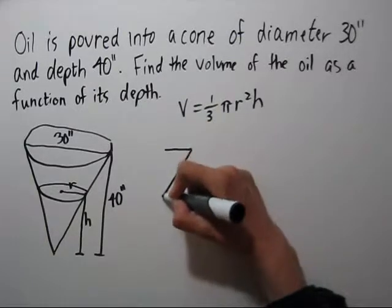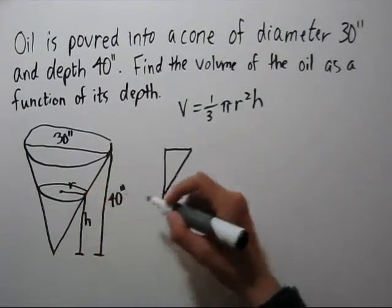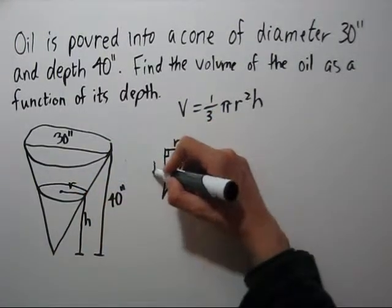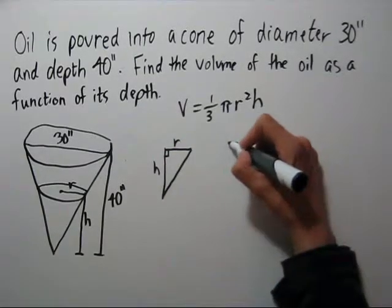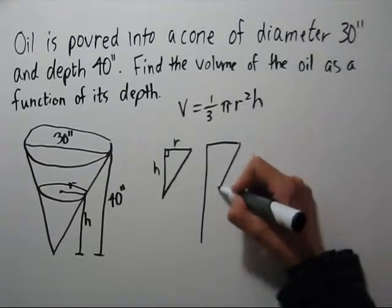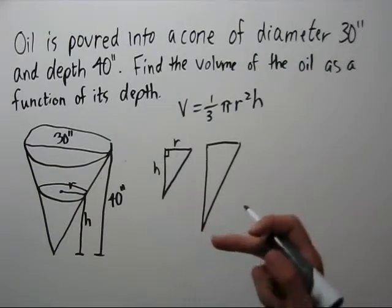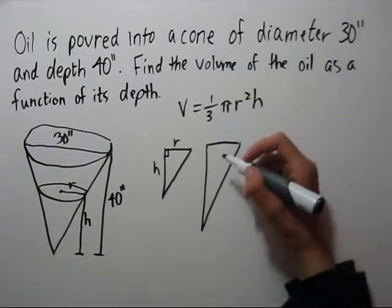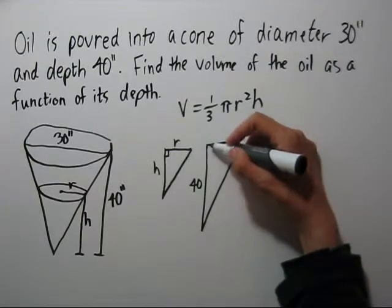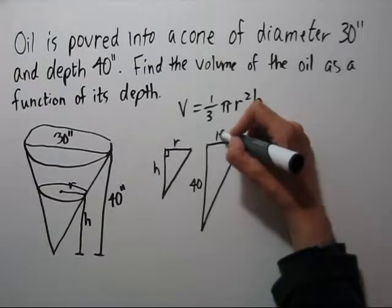So if we take our little cone, take a cross section, we have a right triangle. Here's r, here's h, and then let's take the entire cone. This height is 40, and this leg would be halfway across the 30, or just 15.